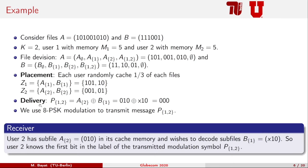In the placement phase, Z1 contains A1 and B1, and Z2 contains A2 and B2. In the second delivery phase, each user requests a file — say user 1 requests file A and user 2 requests file B. In the delivery phase, we create a multicast message P which is useful for both users simultaneously, by XORing A2 and B1. User 1 has B1 in its cache, so it can remove that and decode A2. Similarly, user 2 can decode B1 from this message.